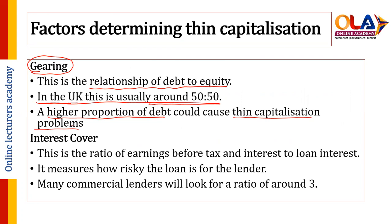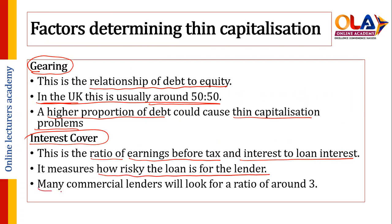As far as interest cover is concerned, this is the ratio of earnings before interest and tax. The formula is PBIT divided by interest. It measures how risky the loan is for the lender, and many commercial lenders will look for a ratio of around three.